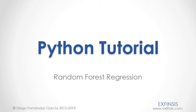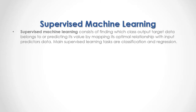Python Tutorial: Random Forest Regression. Supervised machine learning consists of finding which class output target data belongs to, or predicting its value by mapping its optimal relationship with input predictor data. The main supervised learning tasks are classification and regression.